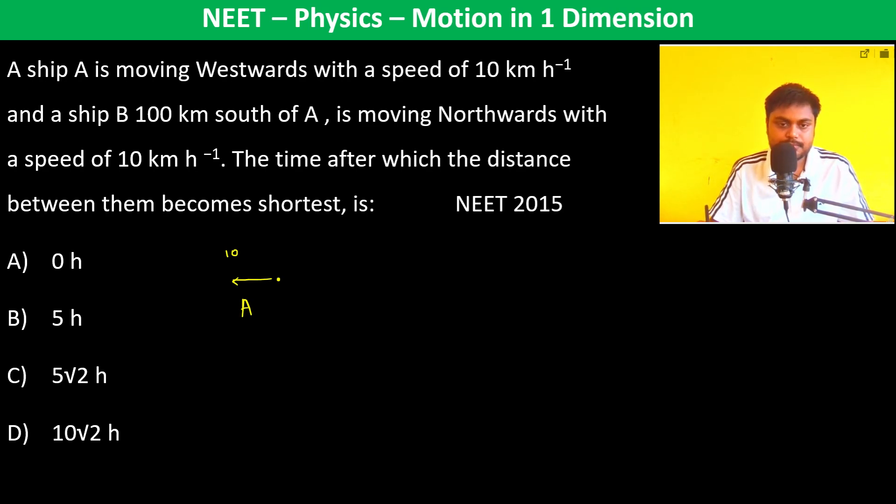A ship B which is 100 kilometers south of A, this is B and this distance is 100 kilometers, is moving northwards with a speed of 10 kilometer per hour. This is moving northwards with a speed of 10. The time after which the distance between them becomes the shortest is.